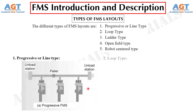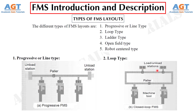In the loop type FMS layout, the basic loop configuration is as shown in figure B. The parts usually move in one direction around the loop, with the capability to stop and be transferred to any station. The loading and unloading stations are typically located at one end of the loop.